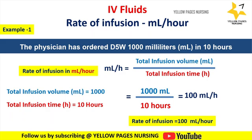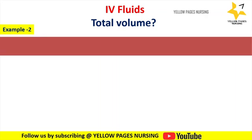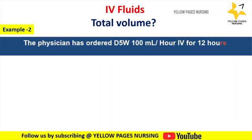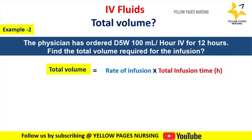Let's do an example for calculating total volume. The physician has ordered D5 water 100 ml per hour IV for 12 hours — find the total volume required for the infusion. The formula to calculate total volume is: rate of infusion multiplied by total infusion time in hours. Here the rate of infusion is 100 ml per hour.